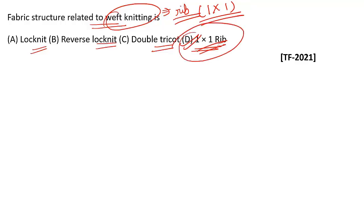If we talk about rib fabric, in the weft knitting process, every wale alternates between the plain and the purl stitches on the right and the back sides. There are two parts: the front part and the back side. These are alternately adjusted and every wale alternates between the plain and the purl stitches — this is known as one cross one rib, one front, one back.